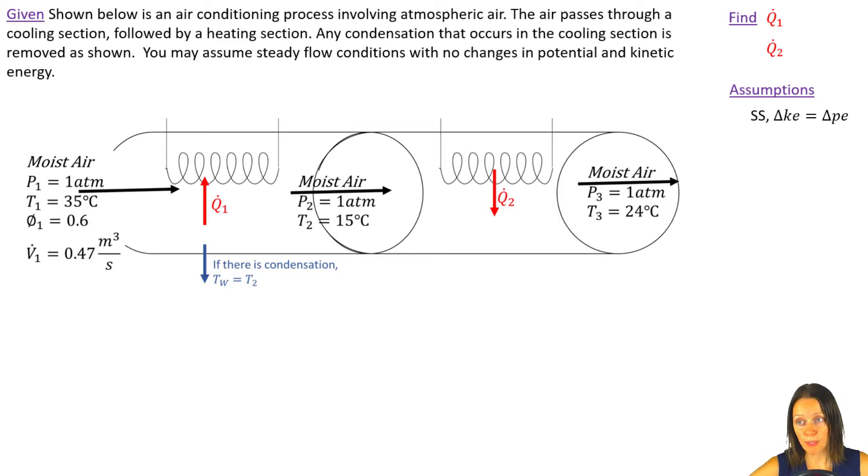We're going to work a problem today where we're looking at an air conditioning process involving two different processes. We've got atmospheric air, moist air flowing through this ductwork, and in the first section of ductwork we have a cooling process, and then we've got a heating process in the second part. I want to find Q1 and Q2, so the heat transfer for both of those processes. I'm going to assume that the process takes place at steady state, changes in kinetic and potential energy are negligible.